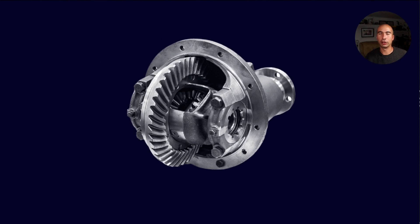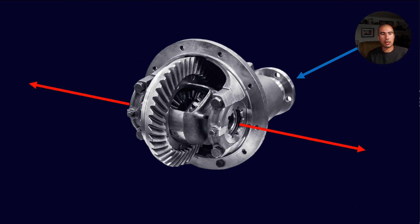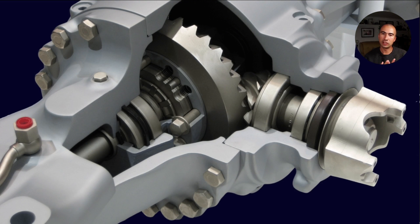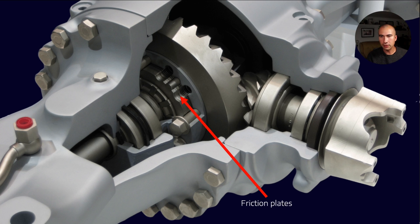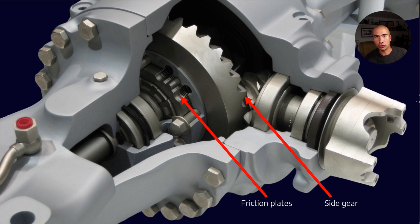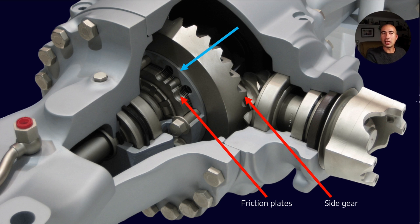Let's take it a step further and talk about limited slip differentials. We have input power and torque being transferred out to the wheels, but in most circumstances there is some kind of mechanism which can partially engage the side gears to the differential cage. In this particular design — I think this is a ZF limited slip diff — there are friction plates which can partially engage the side gear to the cage, enabling power transfer to the wheel that isn't spinning.